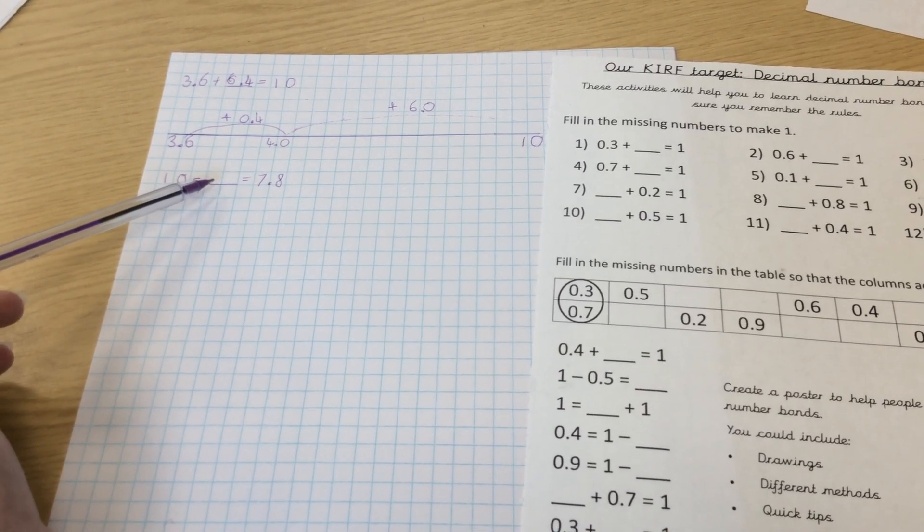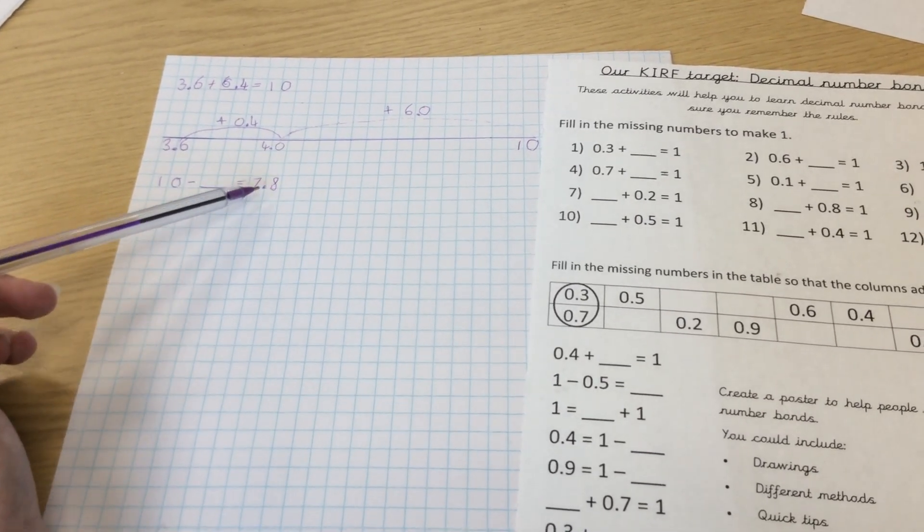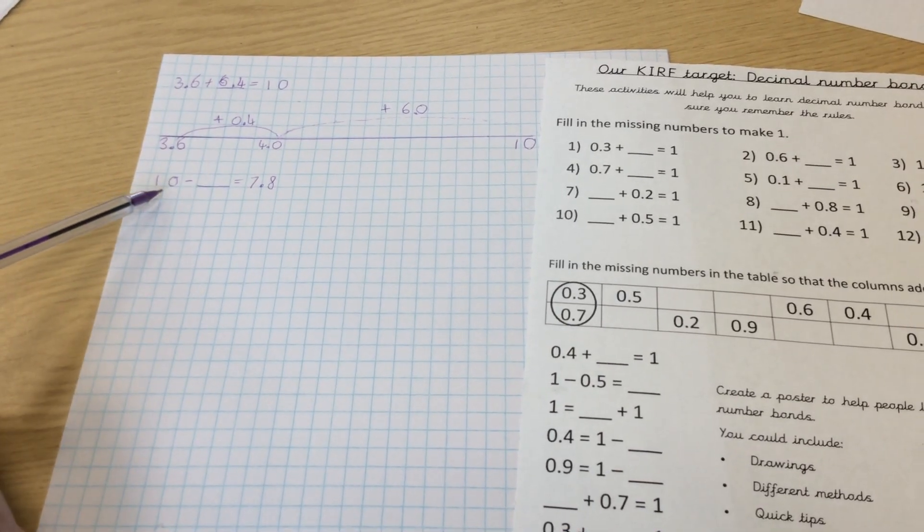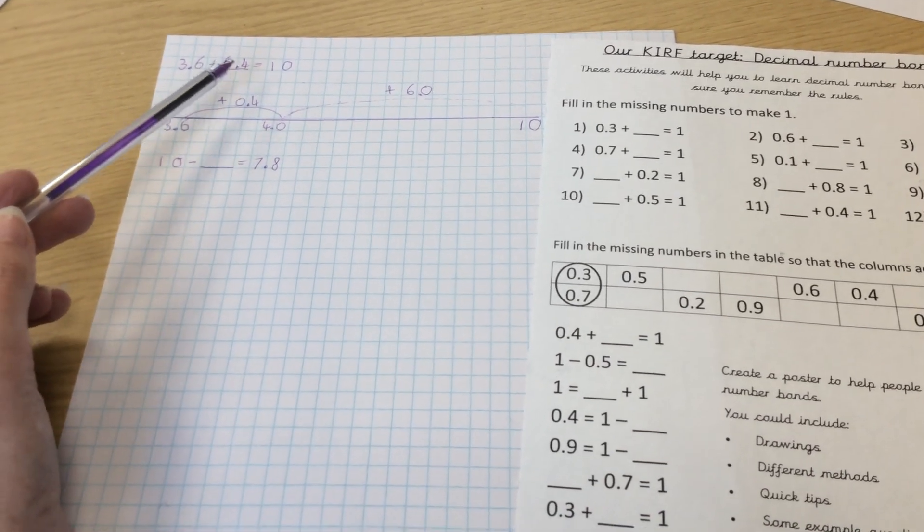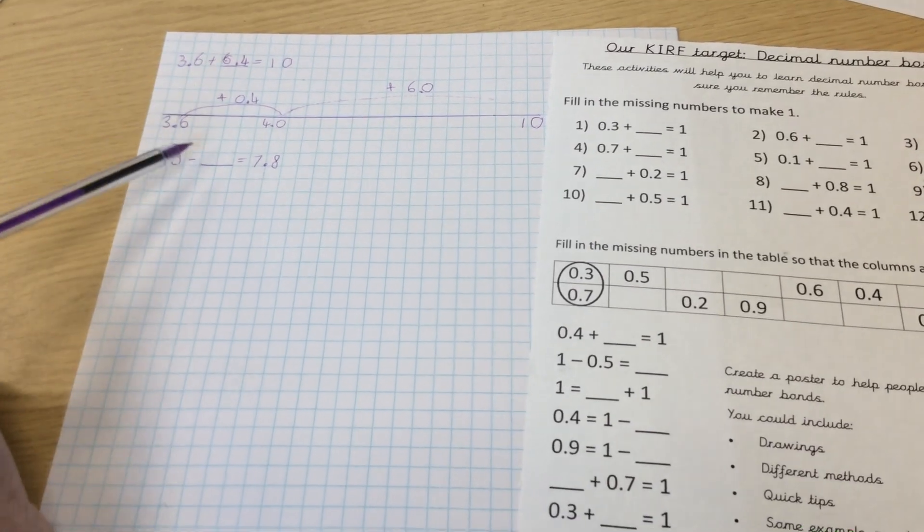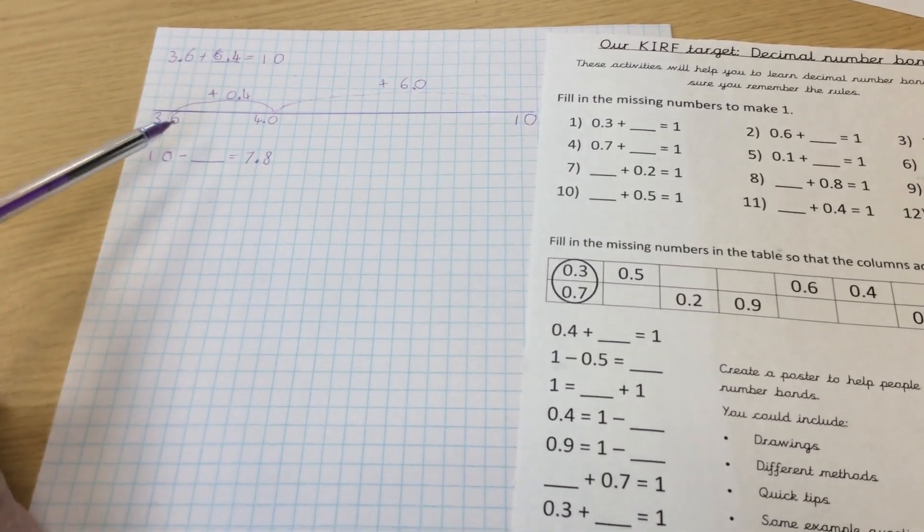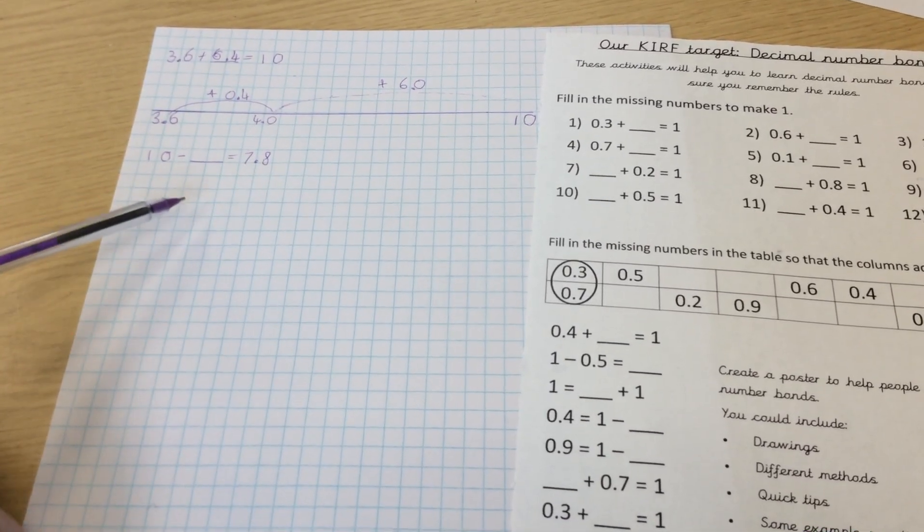So this time we're going to look at 7.8 and see what we need to get to 10, and we can either do that using the method that I used here counting up to 10 and then 9, or we can use our number line method, or you could use column subtraction but that's a little bit tricky when you've got zeros on the end.